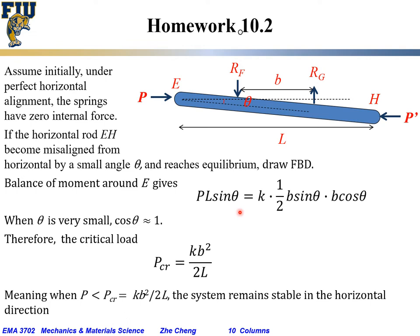Sine theta and sine theta cancel. Since theta is a small deviation, cosine theta equals 1. We get P with 2L in the denominator and K times B squared, giving the critical load PCR equals KB²/2L. So L has units of meters, B has units of meters, so B² over L gives meters, times K (spring constant in N/m), yielding a force. When force is smaller than KB²/2L, the system remains stable; larger and it loses stability.